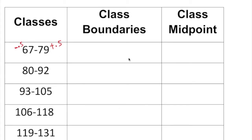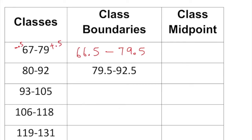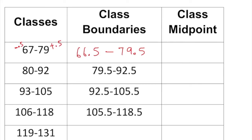This gives us the first class boundary as 66.5 to 79.5 — where 66.5 is the lower class boundary and 79.5 is the upper class boundary. Continuing with the same method, adding 0.5 to each upper limit gives 79.5, 92.5, 105.5, 118.5, and 131.5 as the upper class boundaries. Subtracting 0.5 from each lower limit gives the lower class boundaries.